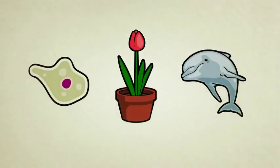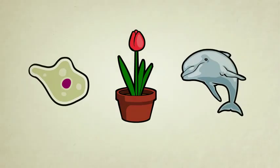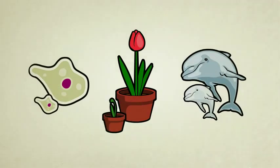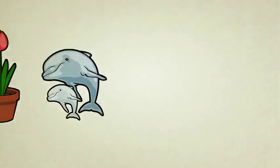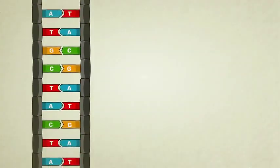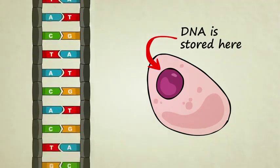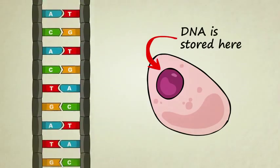All healthy living things, from single-celled amoebas to flowers to dolphins, are capable of reproduction. We have children, we make copies of ourselves. We do this by duplicating our DNA and passing that DNA on to future generations. DNA is a chain-like chemical stored inside each one of your cells, which tells them how to grow and function.